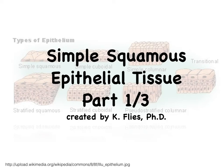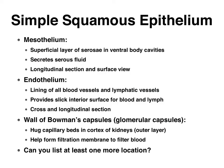Hi, this is Dr. Kat Vlies, and in the next three videos we're going to take a closer look at simple squamous epithelial tissue. We find simple squamous epithelial tissue in quite a few places in the body. We're going to take a look at slides of mesothelium, endothelium, and the wall of Bowman's capsules. There are more locations for simple squamous epithelial tissue, and you may need to think of a couple more examples.